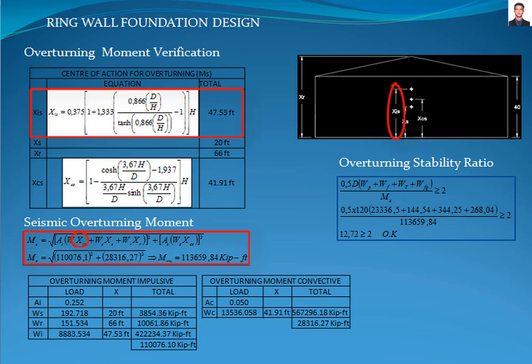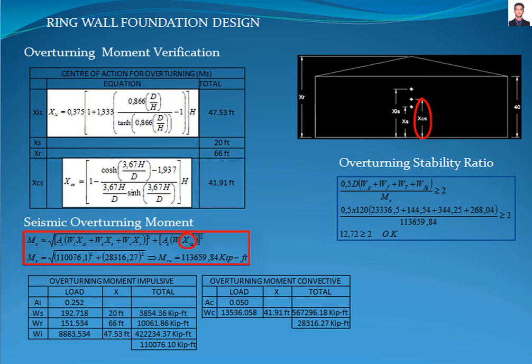XIS is the height from the bottom tank shell to the shell's center of gravity. XR is the height from the bottom tank shell to the roof. XCS is the height from the bottom tank shell to the center of action of the lateral seismic force related to the convective liquid force, calculated with equation E6.1.2.2N-3, resulting in 130,659.84 kip-feet.